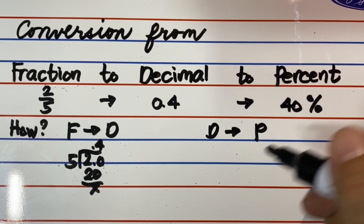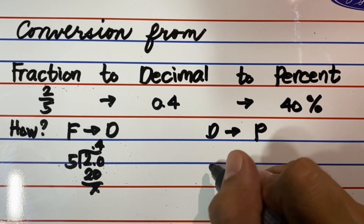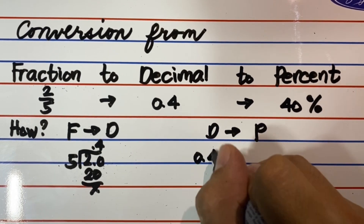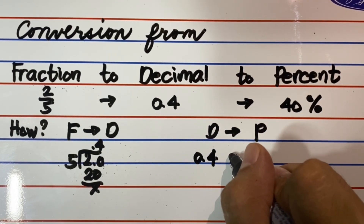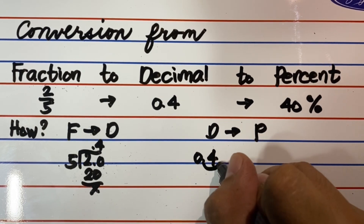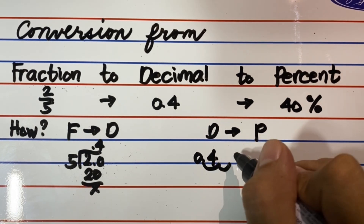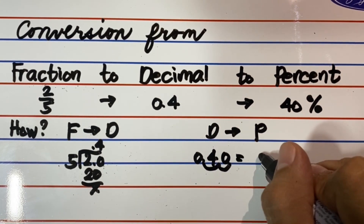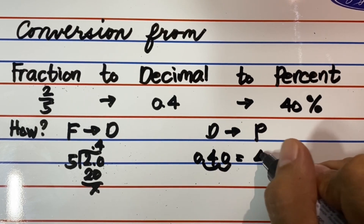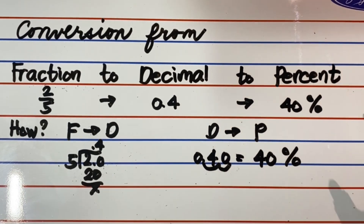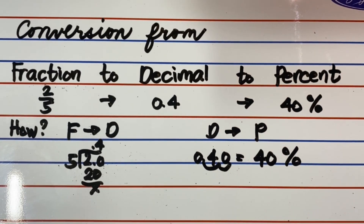How do we convert 0.4 or four-tenths to percent? We simply move the decimal point two places to the right, then affix the percent sign. Watch and learn. 0.4 or four-tenths becomes 40%.